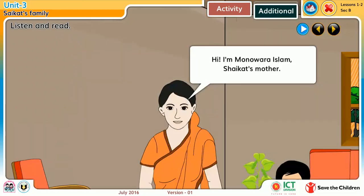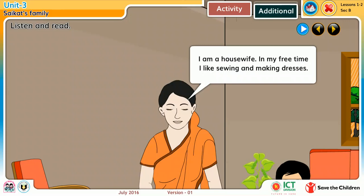Hi, I am Monora Islam, Shoikot's mother. I am a housewife. In my free time, I like sewing and making dresses. I often get orders from my friends and neighbors.